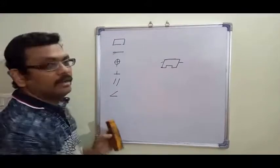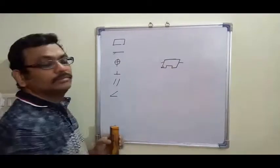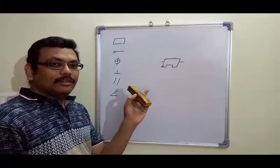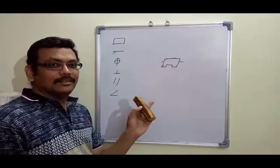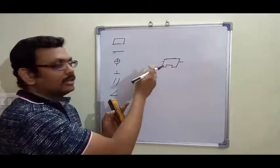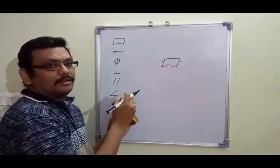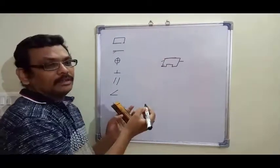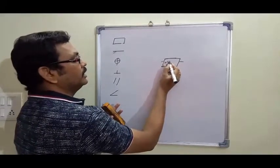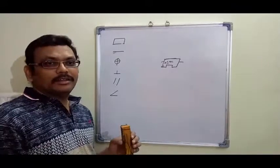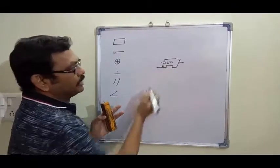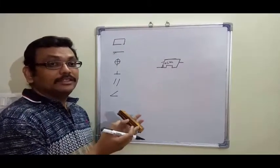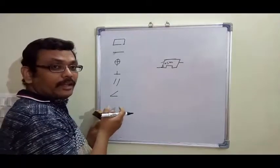Angularity — in the tolerance section on compound tolerances, we have seen a similar example with an angle dimension theta plus or minus tau. This is called angularity. It defines how much a surface is inclined with respect to another surface, and we use it to define the angularity tolerance.